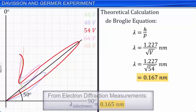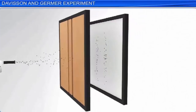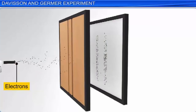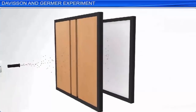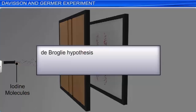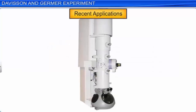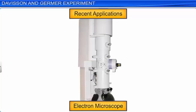The De Broglie hypothesis has been the cornerstone of many advancements and applications in recent times. In 1989, the wave nature of a beam of electrons was experimentally demonstrated in a double slit experiment similar to that used for the wave nature of light. In 1994, interference fringes were obtained with beams of iodine molecules, which are about a million times more massive than electrons. The De Broglie hypothesis has been basic to the development of quantum mechanics, and also led to the field of electron optics. The wave properties of electrons have been utilized in the design of the electron microscope, that provides higher resolution compared to normal microscopes.